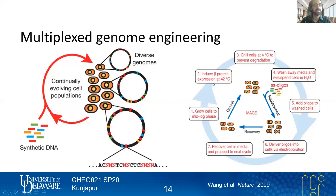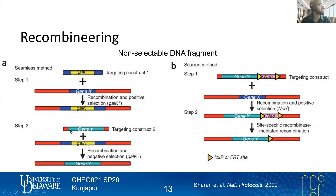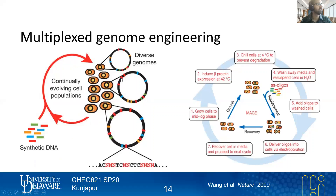You can grow your cells, induce the beta protein, do your electroporation, recover, and then immediately do your next round of transformation. This was a highly accelerated way to do genome engineering, and a very efficient way to generate combinations. Some alternatives involve a step one and step two, targeting with a selectable marker for only one region at a time — not allowing you to do this combinatorially.